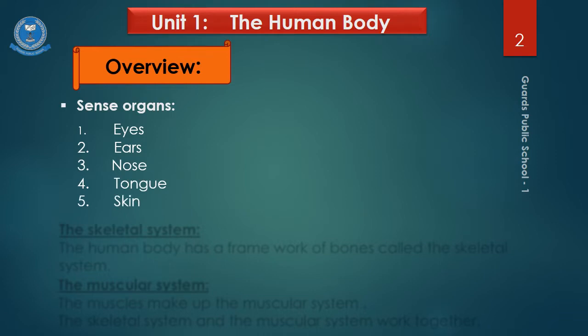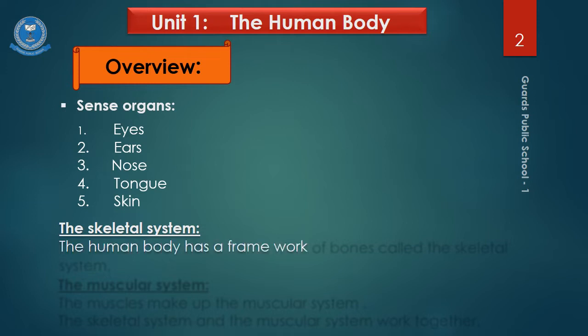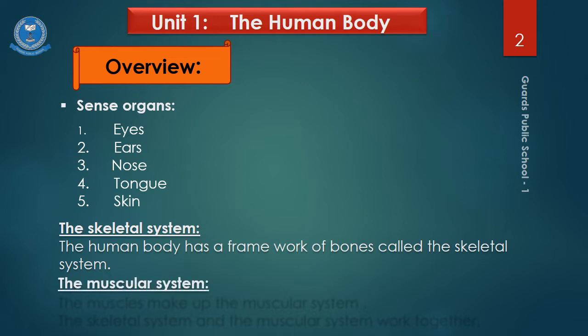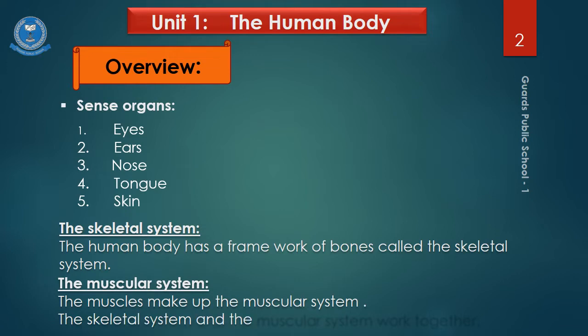We have also discussed about the skeletal system. The human body has a framework of bones called the skeletal system. We also discussed the muscular system — the muscles make up the muscular system. The skeletal system and the muscular system work together.